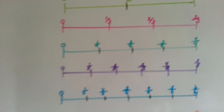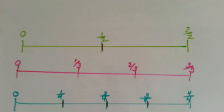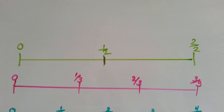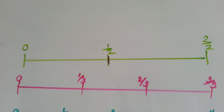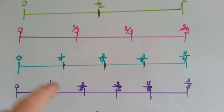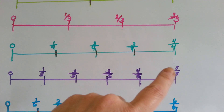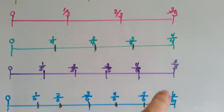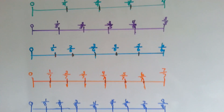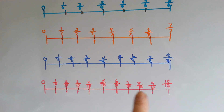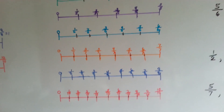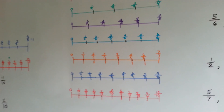Now I've got a bunch of number lines. The green top one is showing things in halves. Then we've got thirds, fourths, fifths — you can tell because it's saying 5 over 5 — then 6 over 6, so this is sixths. Then sevenths, eighths, and we're going to jump to tenths. We're going to see which is more.